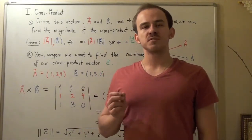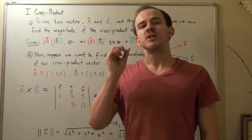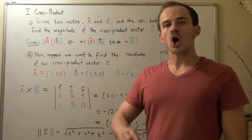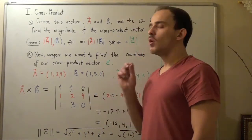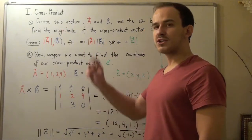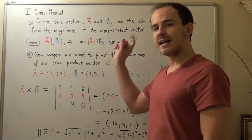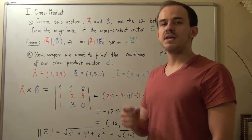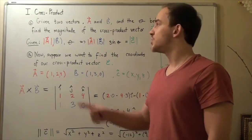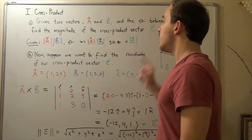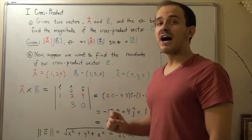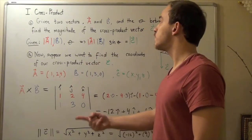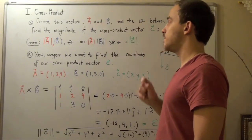We have already spoken about the cross product, but we haven't finished our discussion. So far, this is what we know: given two vectors A and B, the angle between them, and their magnitudes, we can find the magnitude of the vector produced by taking the cross product A cross B.